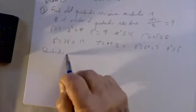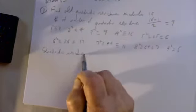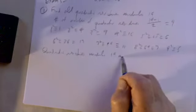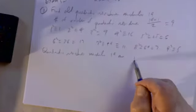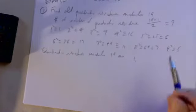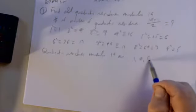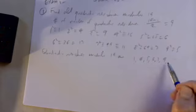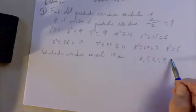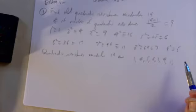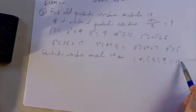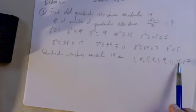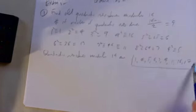So the quadratic residues modulo 19, putting them in order, are: 1, 4, 5, 6, 7, 9, 11, 16, and 17. That's nine of them — I got them all.